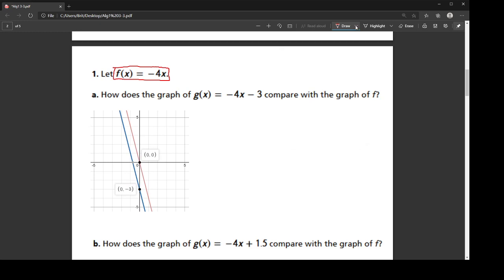So then, on this blue graph, the g function is taking the negative 4x and it's subtracting 3 from it. So if you notice, that anchor point at 0, 0 is now down at negative 3.